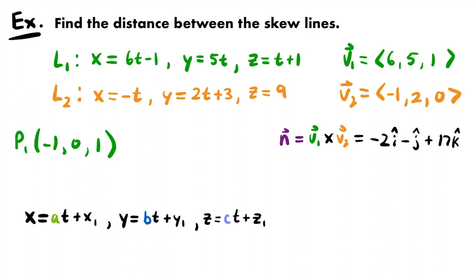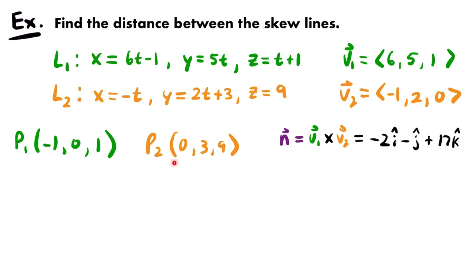For line 2, the constant terms give point p₂ = (0, 3, 9). The x equation is just -t with nothing added, so x = 0; y has +3, so y = 3; and z = 9. Now we use these two points along with the normal vector to create equations of the parallel planes containing these skew lines. Once we have those equations, we calculate the distance between the planes, which equals the distance between the skew lines.